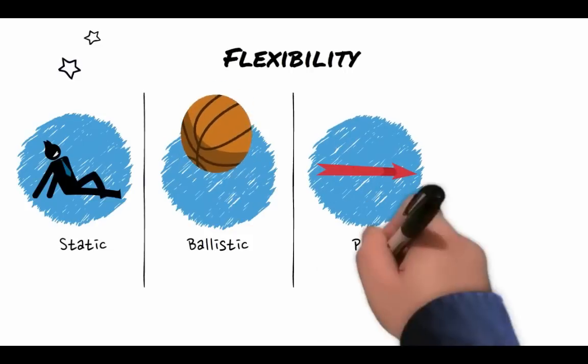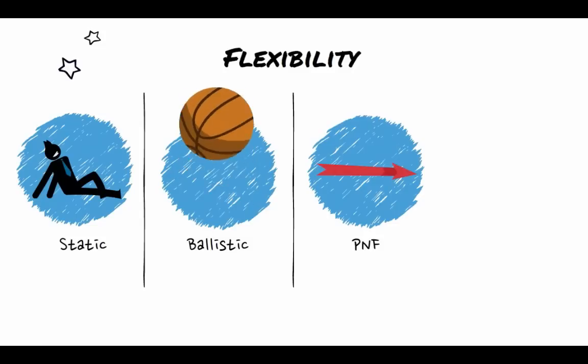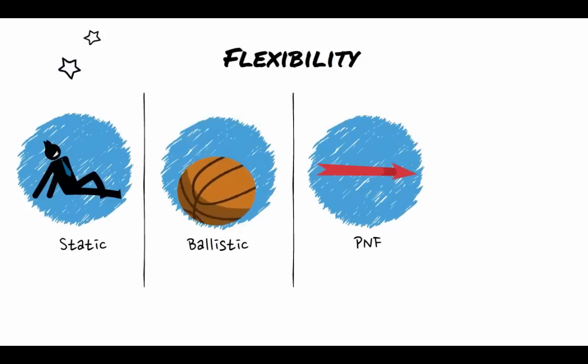Proprioceptive neuromuscular facilitation or PNF stretching involves a static stretch, about 30 seconds, followed by an isometric contraction of the stretched muscle until the stretch is no longer felt, about 5 to 10 seconds. Then a further lengthening of the muscle to hold another static stretch, about 10 seconds. Examples are similar to static stretching but have an isometric contraction within them.